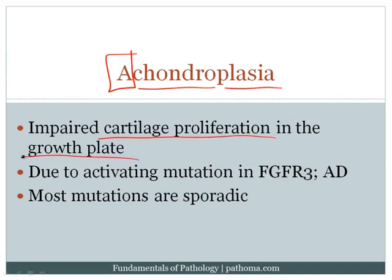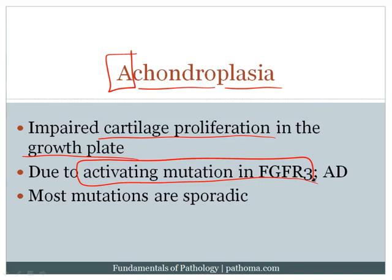Achondroplasia is due to an activating mutation in fibroblast growth factor receptor 3 — very high yield for board exams. You need to know that it is an activating mutation in fibroblast growth factor receptor 3. What happens is that the receptor is turned on because of the mutation, and when the receptor is turned on, that inhibits the growth of the cartilage.